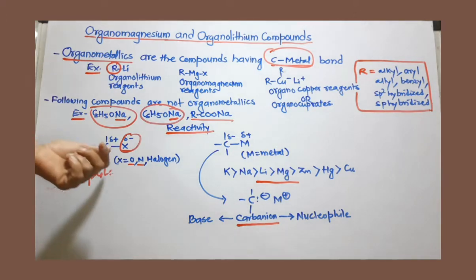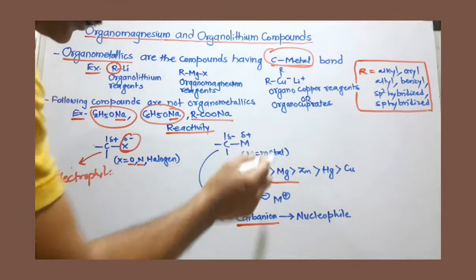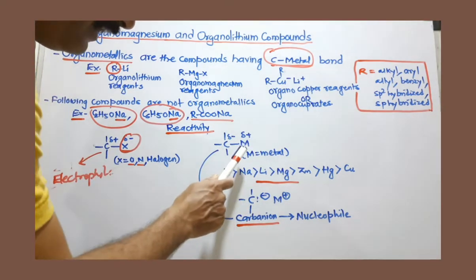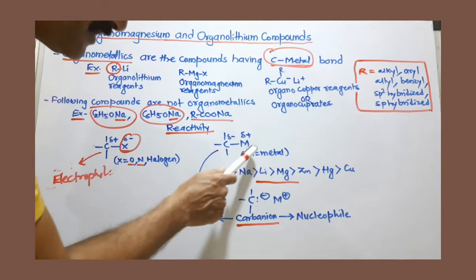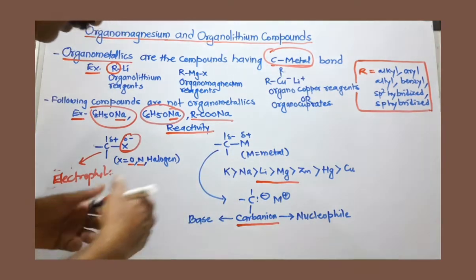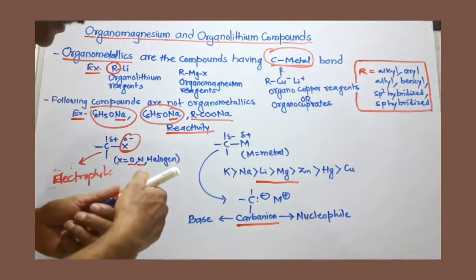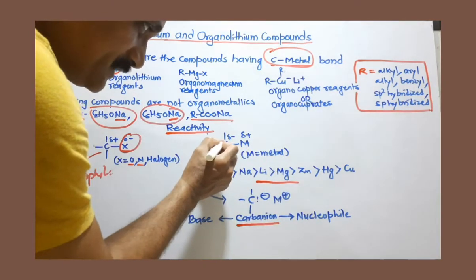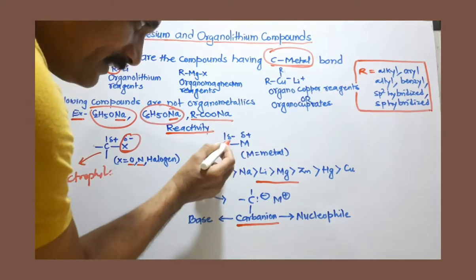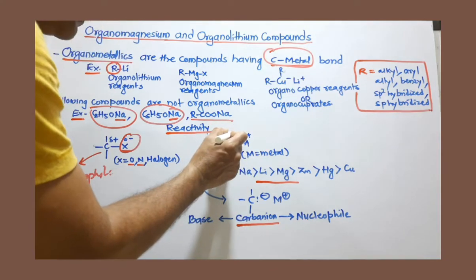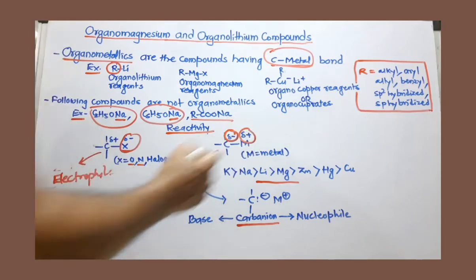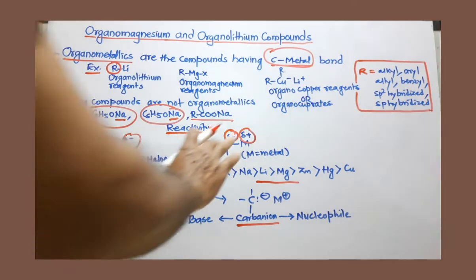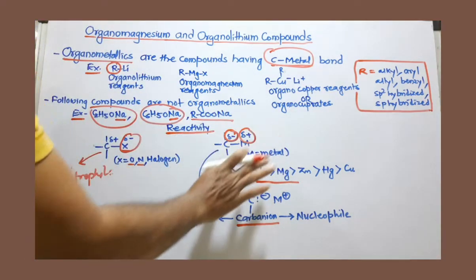But when we change this bond, this X with any metal, as metal are more electropositive. So the metal having less electronegativity than the carbon, then the trend is reversed. So now electron density is moving towards the C, and this is more close to this carbon. This is now having partial negative charge, and metal will have a partial positive charge, or a complete ionic bond will be there.